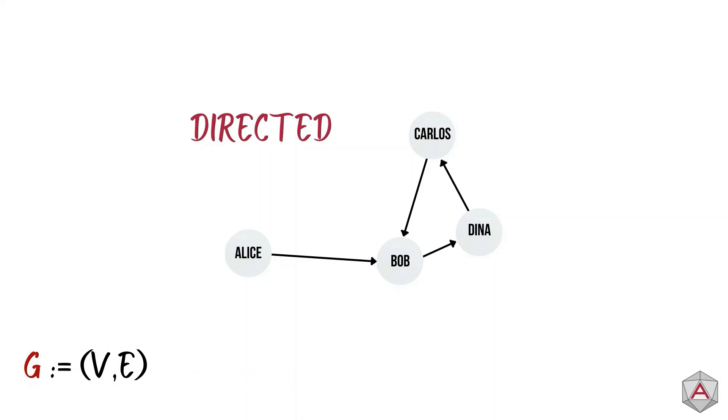Another popular type of graph is a weighted graph. In the graph, the edges are assigned a value or a weight. A graph can be both weighted and directed.